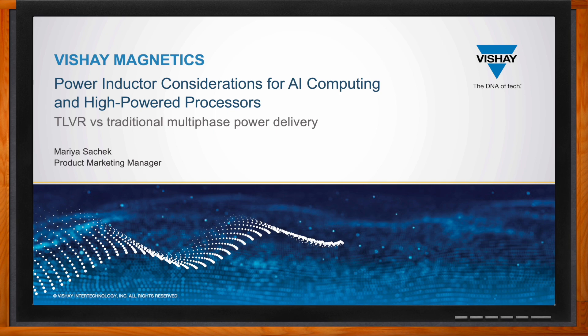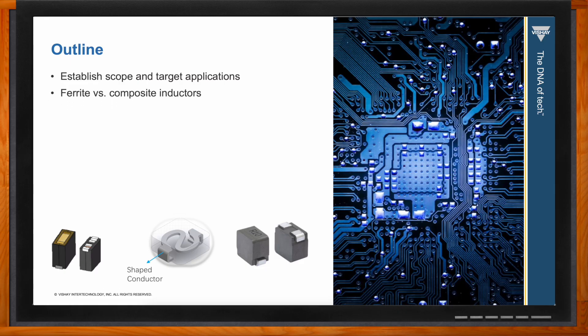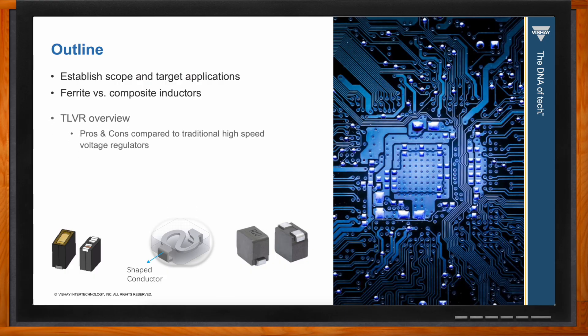We're talking about what to consider when choosing a power inductor for AI computing and high-powered processors. To start, we'll establish the scope and the specific set of applications, then take a look at inductors from a material standpoint — specifically comparing performance between two common core materials: ferrite and composite.